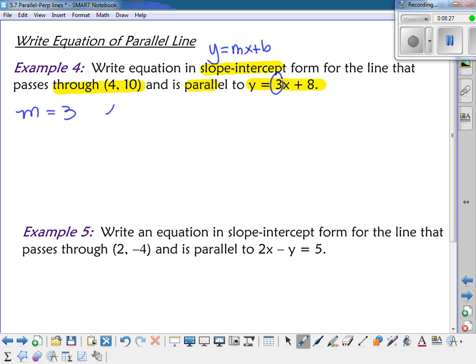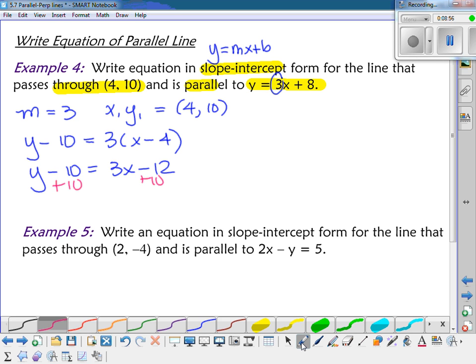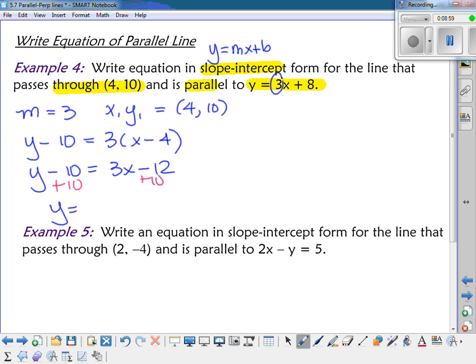So M is equal to 3, and then my X sub 1, Y sub 1, I'll just use 4, 10. So now I plug it into point slope. Y minus 10 equals 3 times X minus 4. But we want slope-intercept, so I get the Y alone. I go ahead and distribute the 3, and I get 3X minus 12. And then I just have to add the 10 to both sides. And I get Y is equal to 3X minus 2.